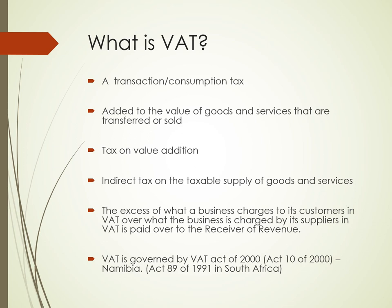The excess of what a business charges to its customers in VAT over what the business is charged by its suppliers in VAT is paid over to the receiver of revenue. In other words, output tax minus input tax is what is paid to the receiver of revenue. We'll look at output tax and input tax further on in the slides. Value-added tax is governed by the VAT Act of 2000 in Namibia, while in South Africa it's governed by Act number 89 of 1991.